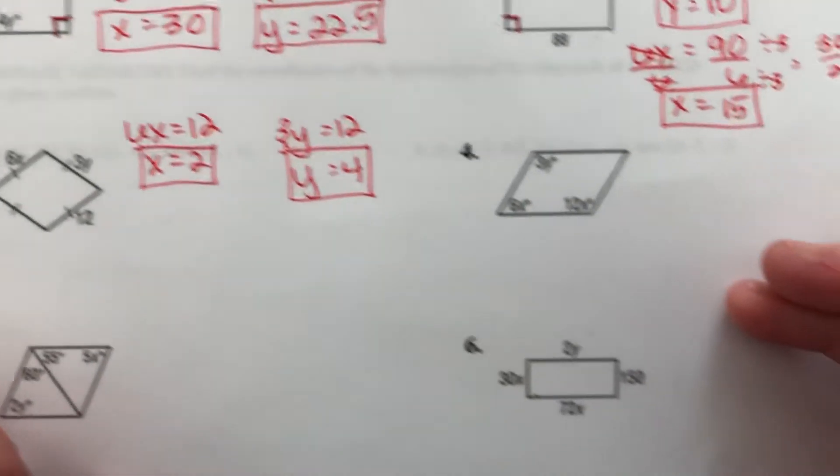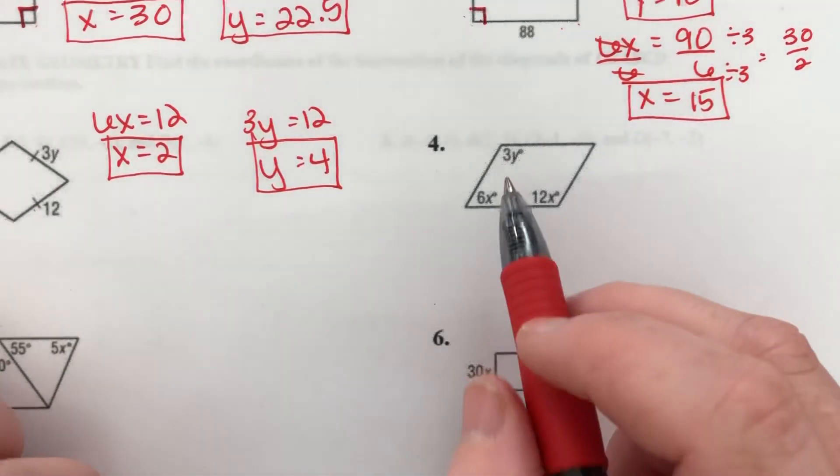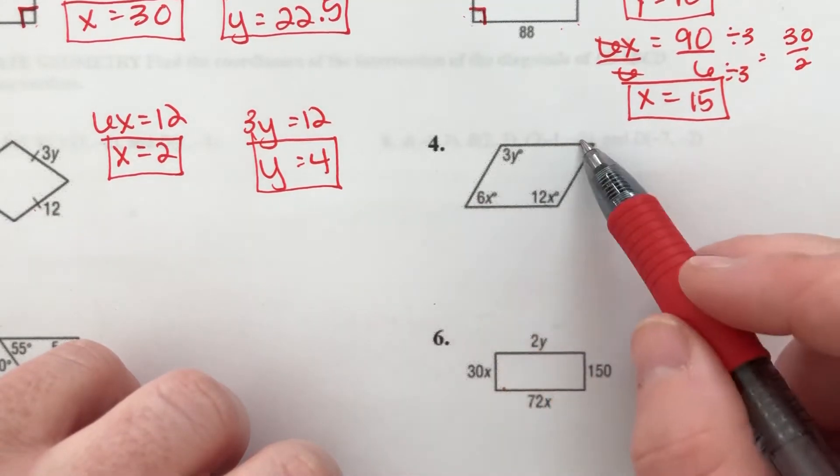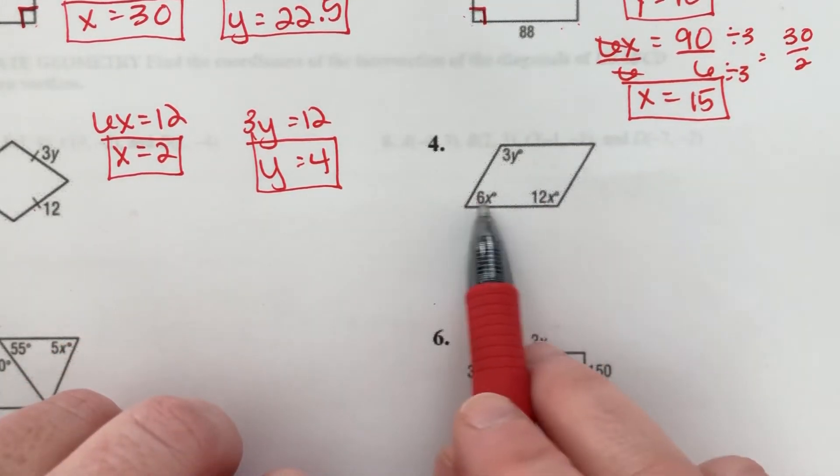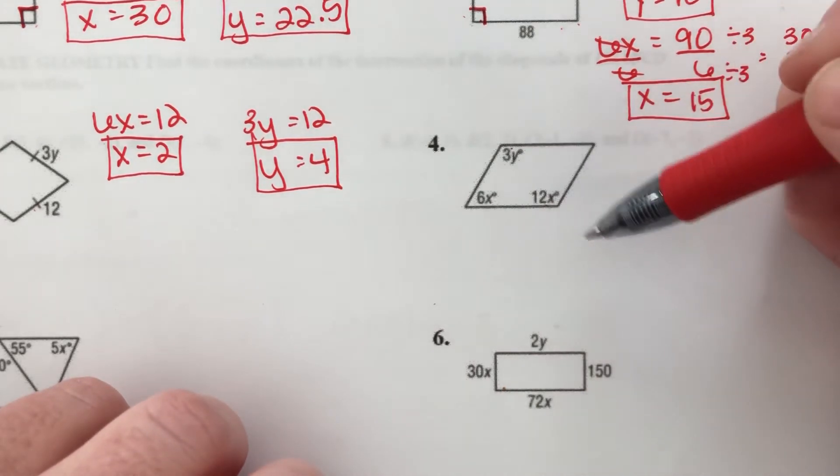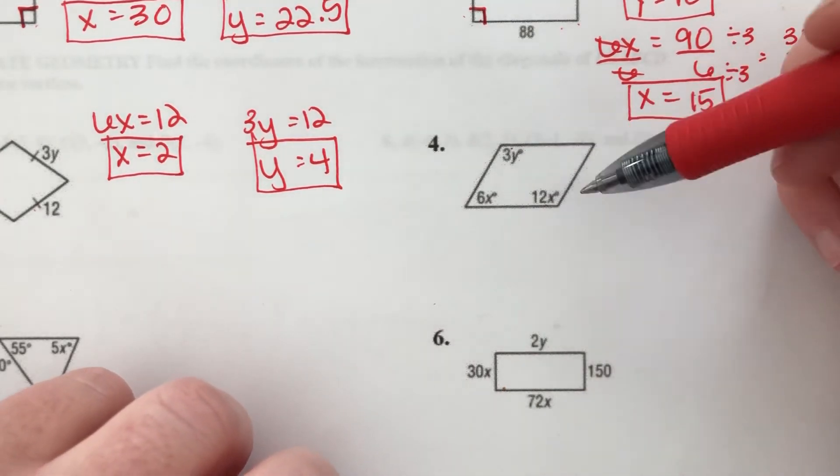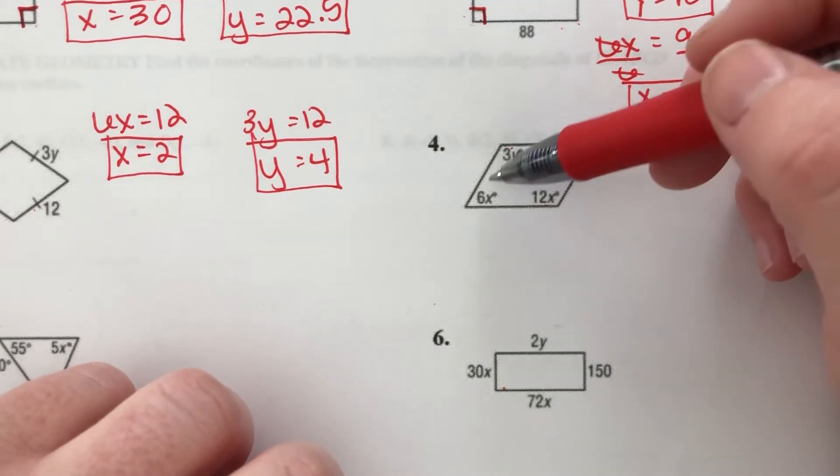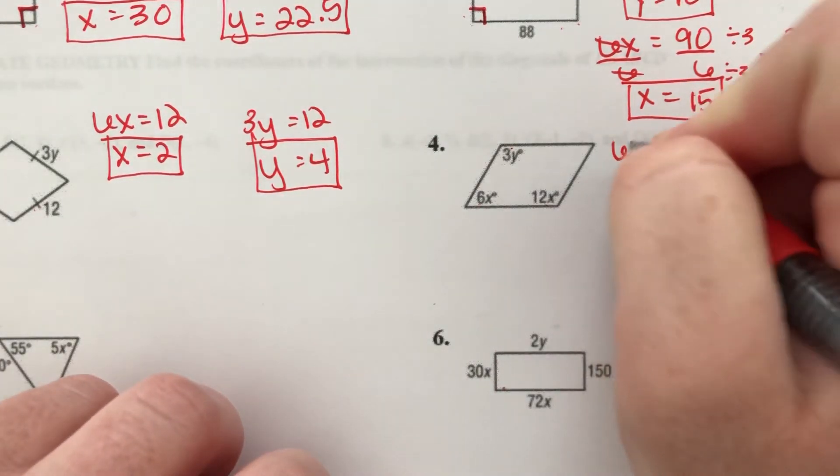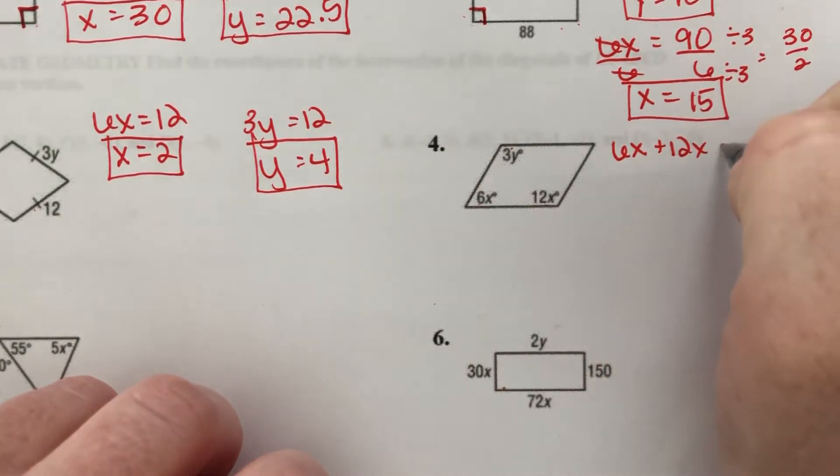Number 4. Parallelogram. Opposite angles are congruent here, and angles next to each other are supplementary. Well, I can't set 3y and 12x equal to each other because I can't solve for one if I don't know what the other is. But I know 6x and 12x are going to add up to 180. So I'm going to start there.